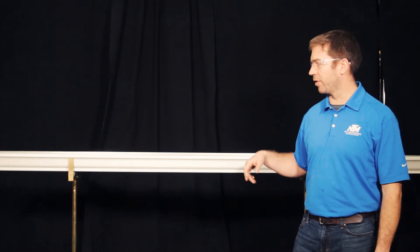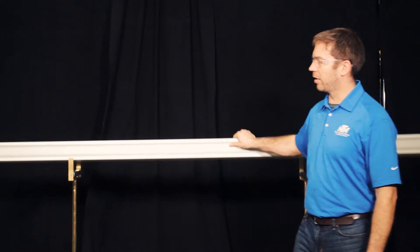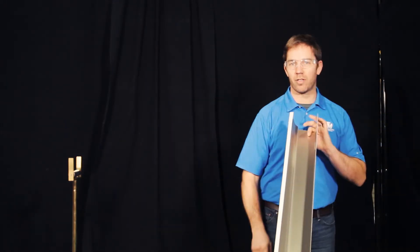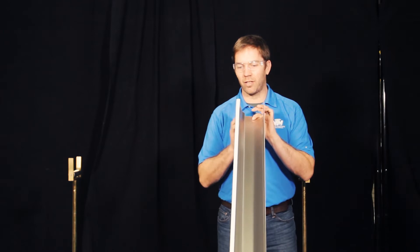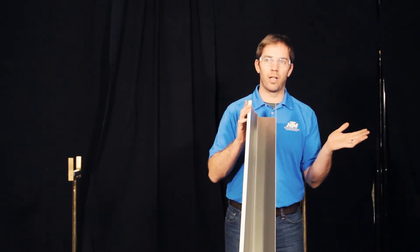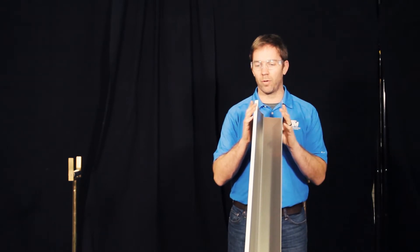First thing you want to do is run a piece of at least seven to eight foot material through your gutter machine. Once you run it through your machine, you're going to grab a hold of it, stand on one side, and I like to stand where the face of the gutter is on my right hand, back of the gutter on my left, kind of like the way it would be mounted to a piece of fascia board.